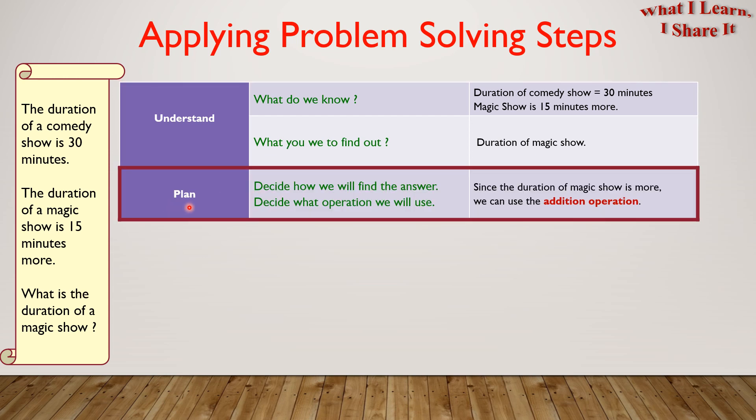Second step is to plan and while planning we need to decide how we will find the answer. We can also decide which strategy to follow and what operation to use. Since the duration of the magic show is more we can use the addition operation.